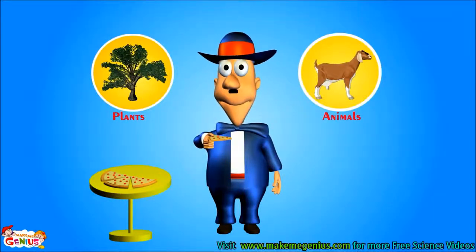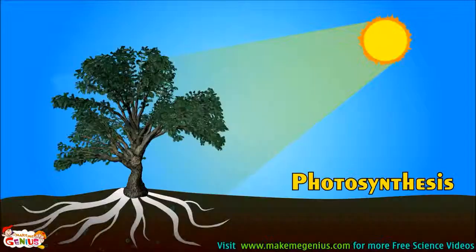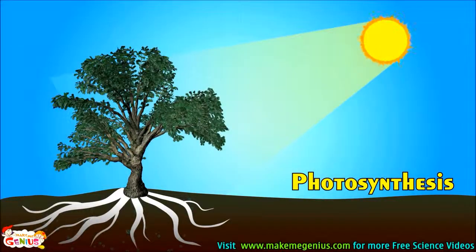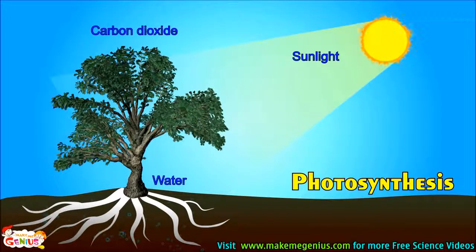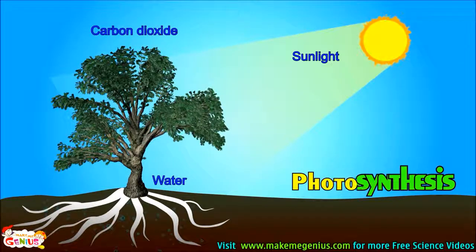We humans get all our food from animals and plants. Let me tell you more about food. Plants are the only living species who make their own food. They use sunlight, carbon dioxide from air, and water from soil to make their food.